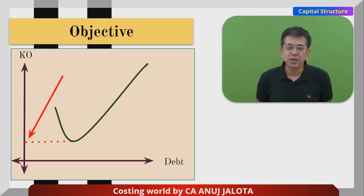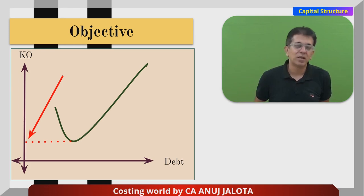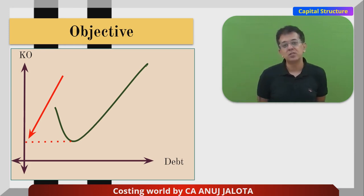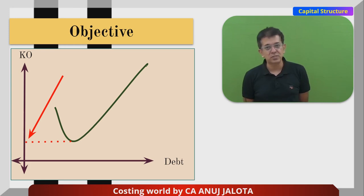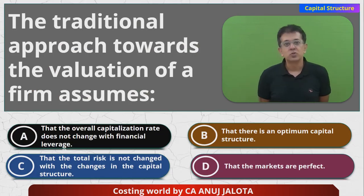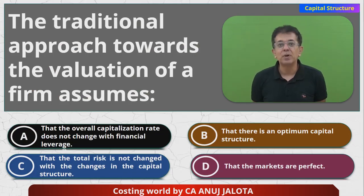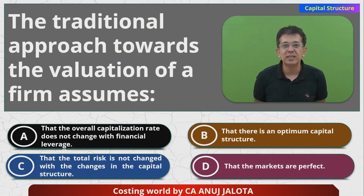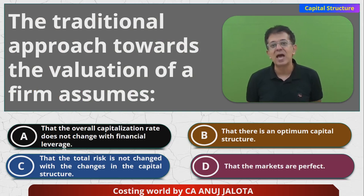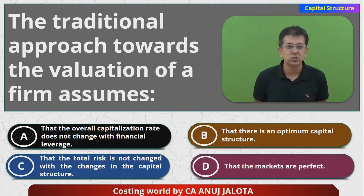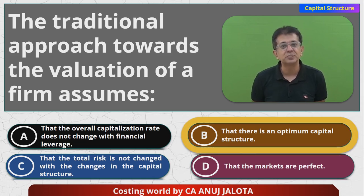At that particular point, whatever is the debt level, that should be the optimum level of debt — that is what the traditional authors had told us. So out of the four options, option B is the one that tells you there is an optimum capital structure. The answer should be B. That is the correct answer.